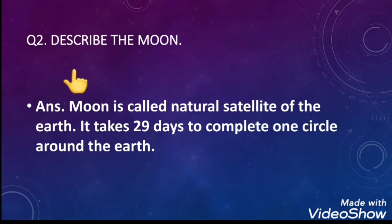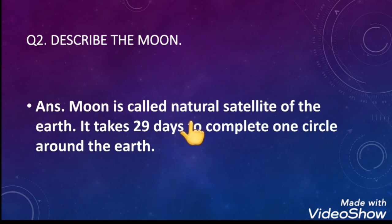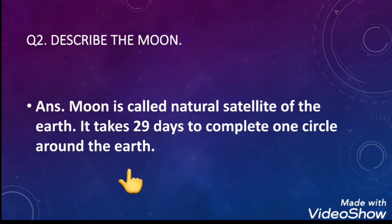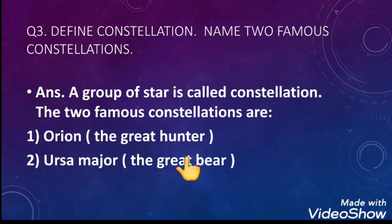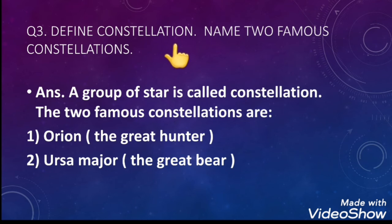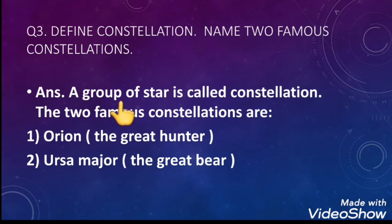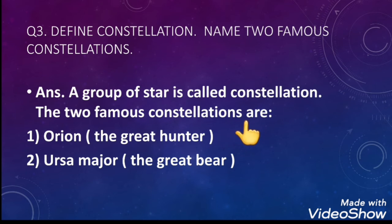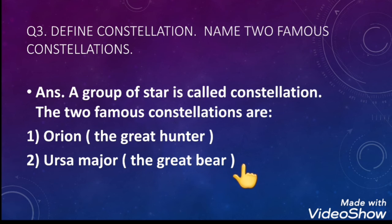Question number two: describe the moon. The moon is called the natural satellite of the earth. It takes 29 days to complete one circle around the earth. Question number three: define constellation and name two famous constellations. A group of stars is called a constellation. The two famous constellations are Orion the Great Hunter and Ursa Major the Great Bear.